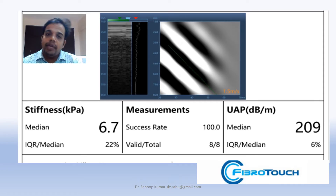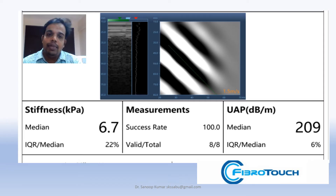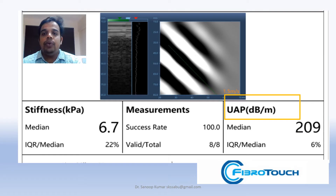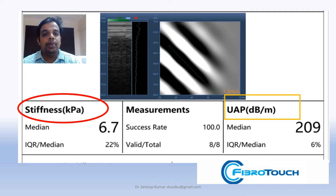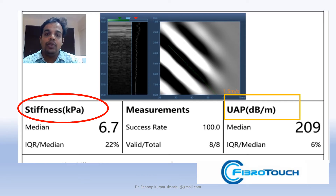Moving to the FibroTouch machine — the technique varies slightly but the interpretation is similar. You have the UAP value, or Ultrasound Attenuation Parameter, which is equivalent to the CAP. Same threshold applies: if UAP is more than 240, consider it as fatty liver. Then you have the stiffness value — the LSM in kilopascals (KPA). The same threshold applies: if it is more than 10, consider it significant fibrosis and evaluate for fibrosis or cirrhosis. IQR by median more than 30% means the report cannot be accepted.